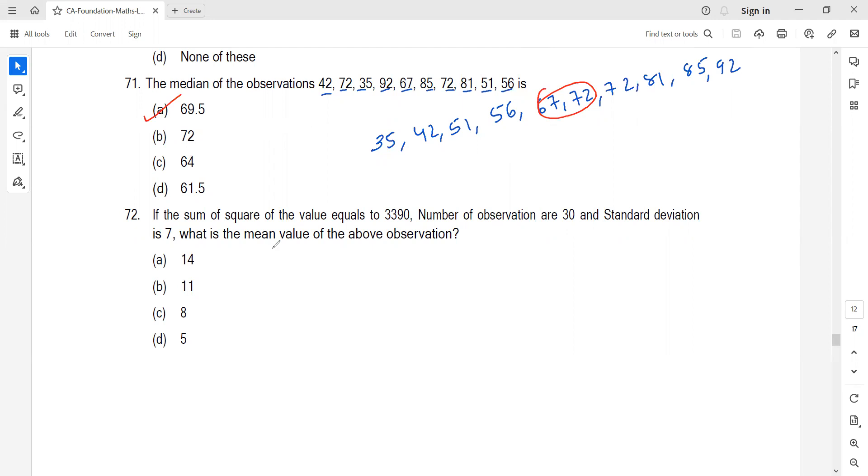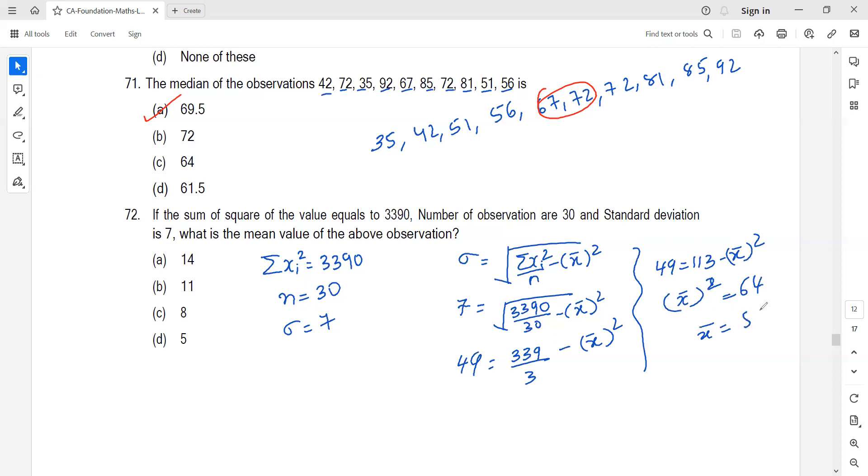Sum of squares of values equals 3390, number of observations is 30, standard deviation is 7. Standard deviation's alternative formula is root of summation xi square by n minus x bar square. So 7 equals root of 3390 by 30 minus x bar square. Squaring both sides: 49 equals 113 minus x bar square. X bar square equals 64, so mean is 8. Option C.